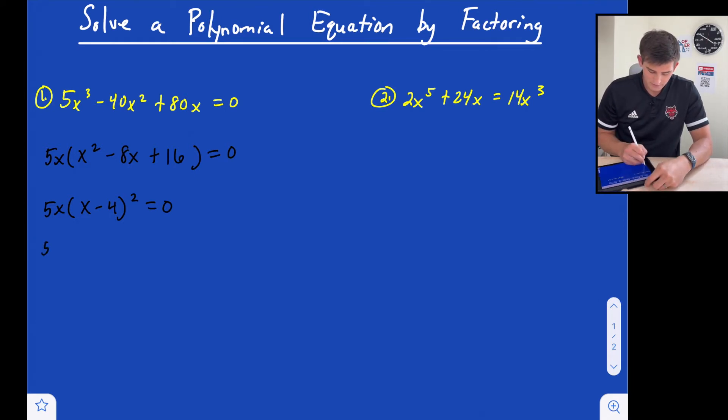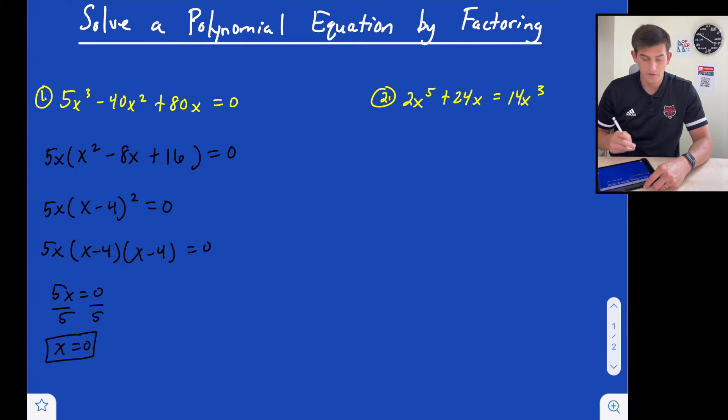So essentially what we have is 5x times x minus 4 times x minus 4, and now we can set each of those equal to zero. Well we say 5x equals zero. We divide both sides by 5 so we get x is equal to zero. So that's one of our zeros or solutions or roots of the equation. And then we say x minus 4 is equal to zero. So we add our 4 and we get x is equal to 4.